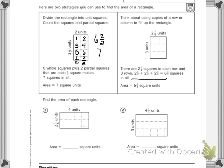So our repeated addition right here, we did two and one fourth plus two and one fourth plus two and one fourth equals six and three fourths squares in all.